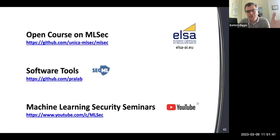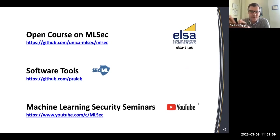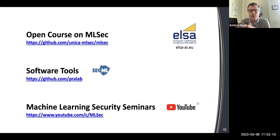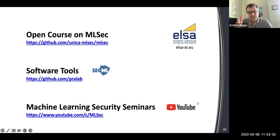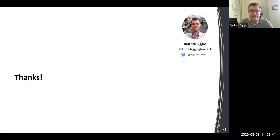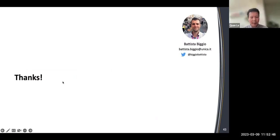I acknowledge the ELSA network, a European project promoting a network of excellence around Europe for AI safety, robustness, fairness, and other trustworthy AI pillars. We run competitions in areas including malware detection, autonomous driving, and robotics. We have an open course on machine learning security every November–December, a library called SecML to run tests and attacks, and monthly security seminar lectures with invited guests. Thank you very much.